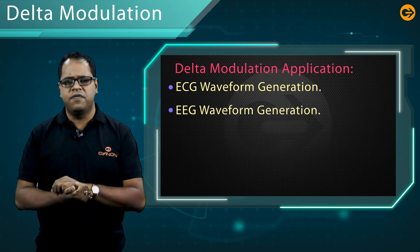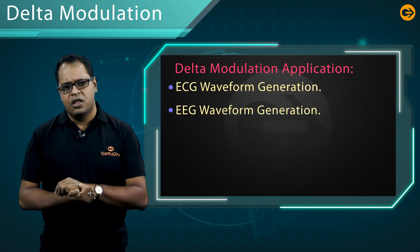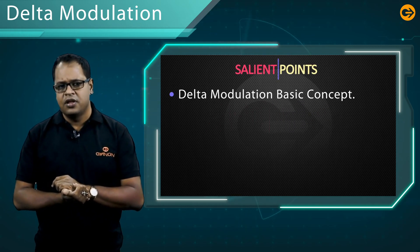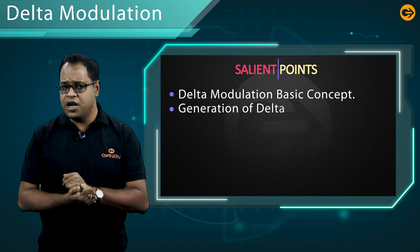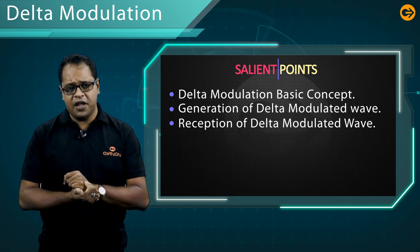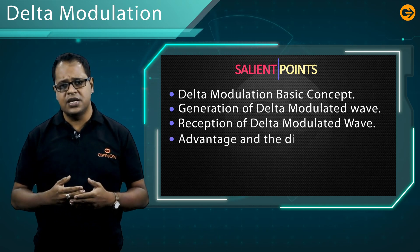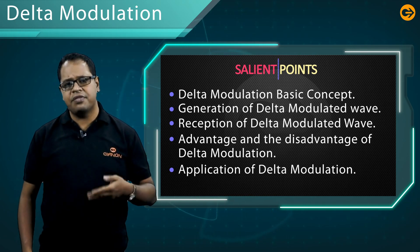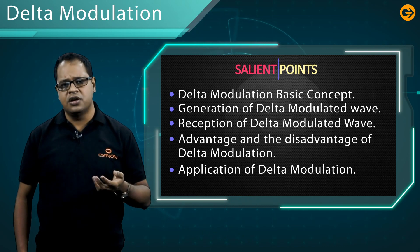Delta modulation applications include ECG waveform generation and EEG waveform generation. Today we discussed the basic concept of delta modulation, its generation, reception, advantages, disadvantages, and applications. Practice the delta modulation segment repeatedly. In our next segment we are going to discuss more advanced and interesting topics. Thank you viewers, bye.